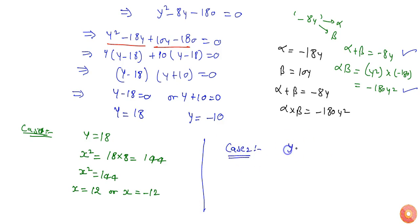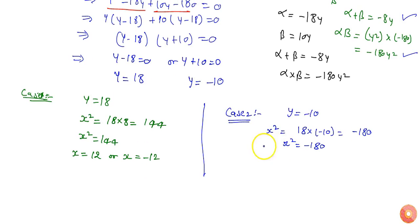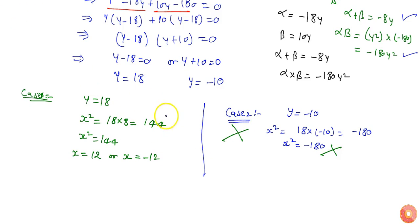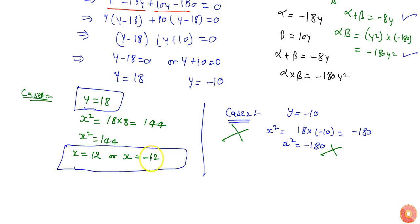Case 2: when the larger number Y equals minus 10, then X squared equals 8Y, so X squared equals 8 times minus 10, which is minus 180. But we know the square of any positive or negative number cannot be negative, so this case is not possible. We shall not consider Case 2. The only valid answer is Y equals 18, and X equals plus 12 or minus 12.